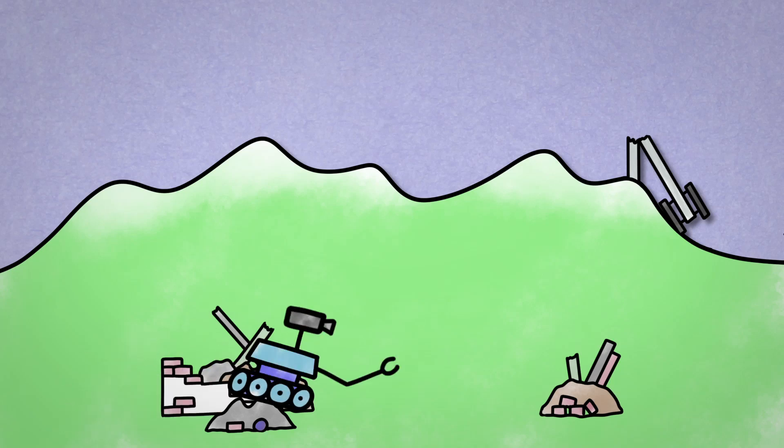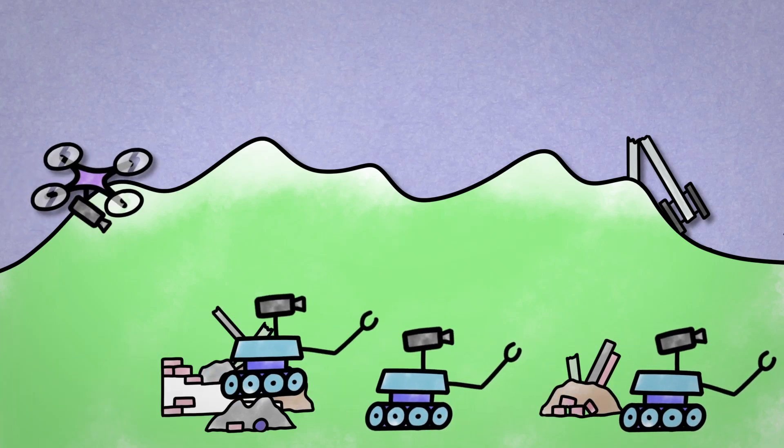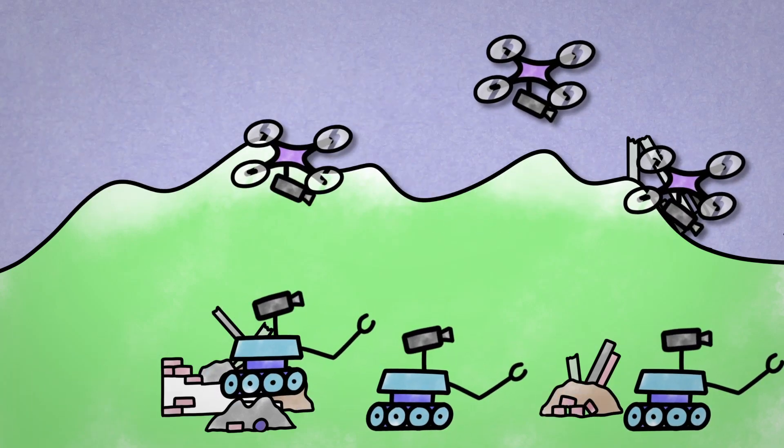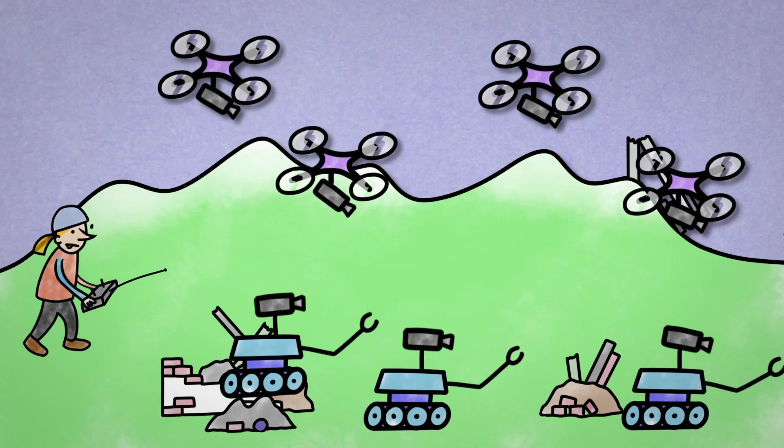Luckily, help came quickly. A swarm of rescue robots and drones, searching for people in the rubble with cameras. But how do they transfer all those images?